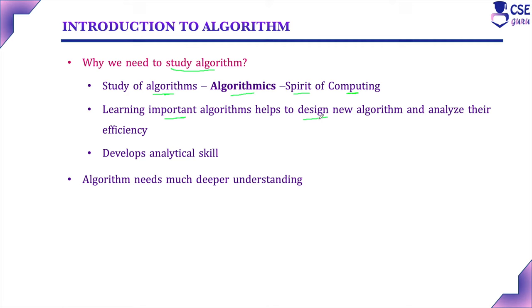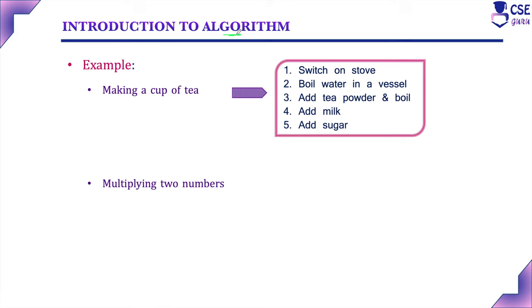To solve the same problem, we can develop different algorithms with different efficiencies. Learning different algorithms develops analytical skill. To learn and gain knowledge in algorithm needs deeper understanding. Algorithm is a finite set of instructions to solve any problem. The set of instructions we follow to write any algorithm is closely related to our day-to-day life activities.